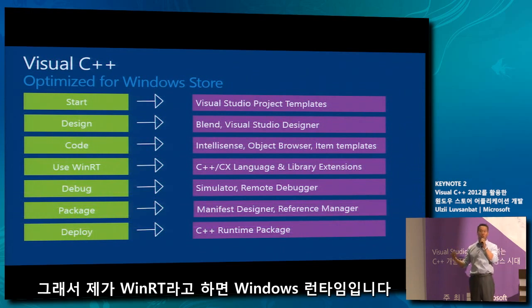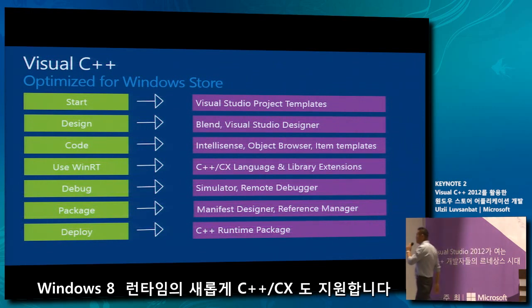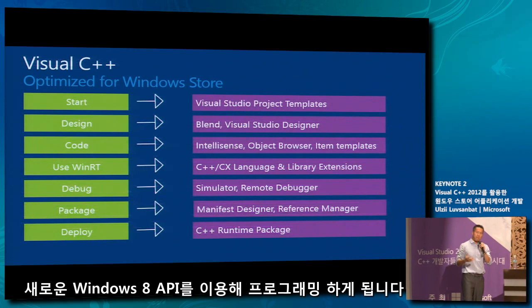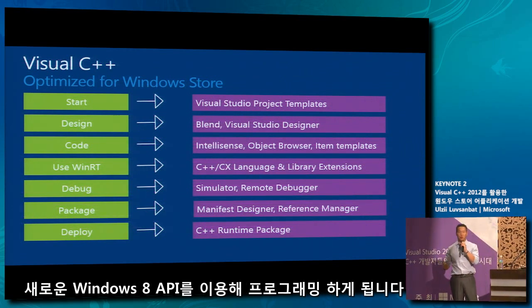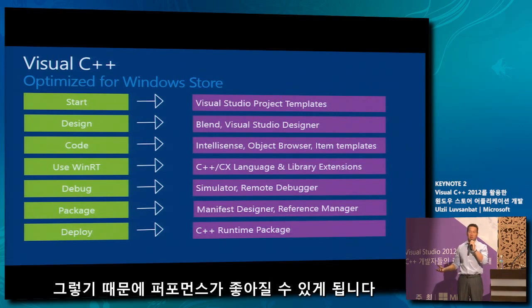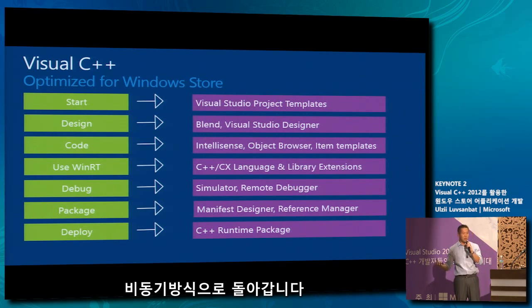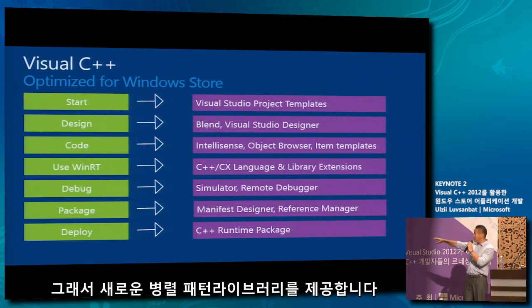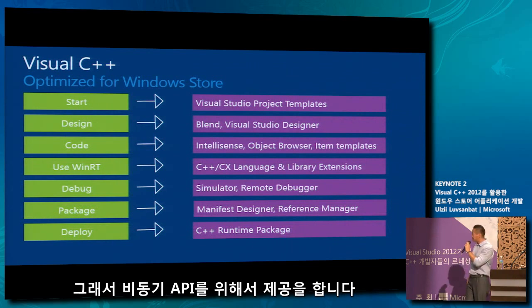For the Windows 8 Runtime, we have implemented new language extensions called C++ CX and library extensions. The library extensions make it easy for you to program against the new Windows 8 APIs. In the new Windows 8 APIs, over 90% of them are asynchronous APIs, which make your applications very performant and robust. However, programming against asynchronous APIs is very difficult to do deterministically. Thus, we have provided a new set of extensions in the Parallel Patterns Library, PPL, for async APIs.